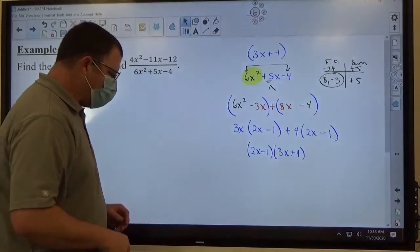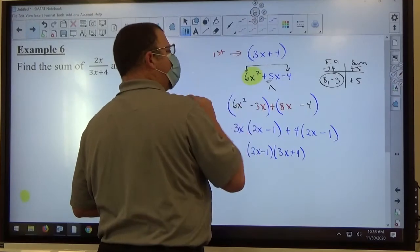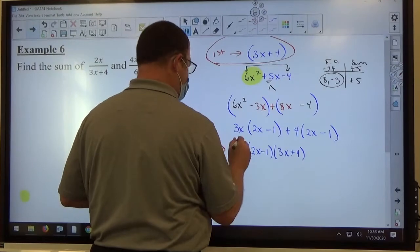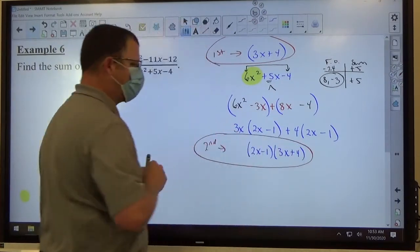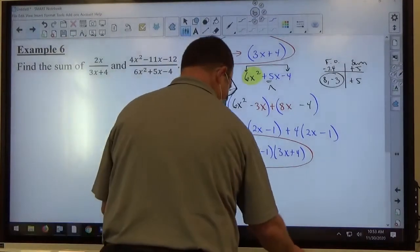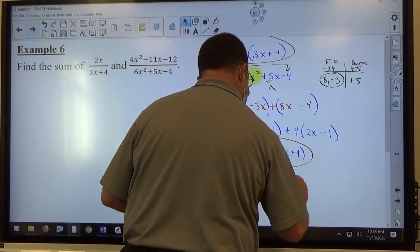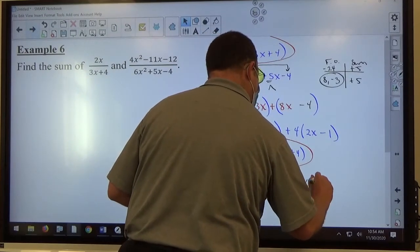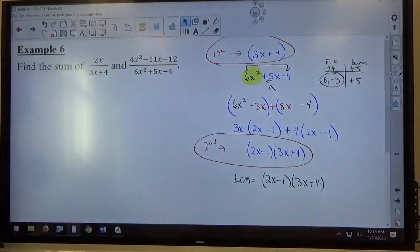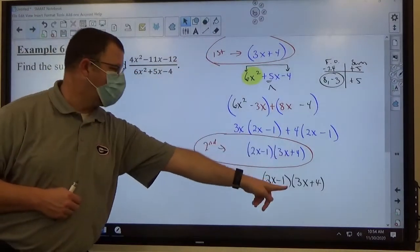I've got the factored forms of both denominators. The first fraction, the factored form is 3x + 4. The second fraction, the factored form is (2x - 1)(3x + 4), which means the least common multiple is going to be (2x - 1)(3x + 4). Everything is the first power, so it's just the product of those two pieces. 3x + 4 and 3x + 4 match, and we write it down one time.